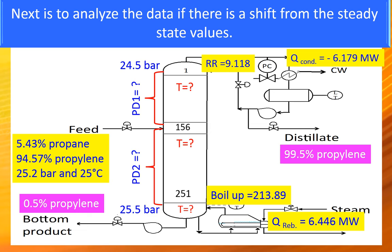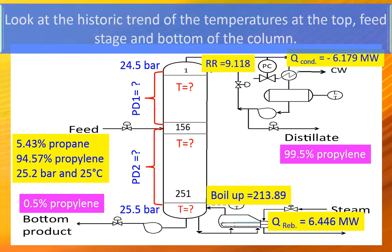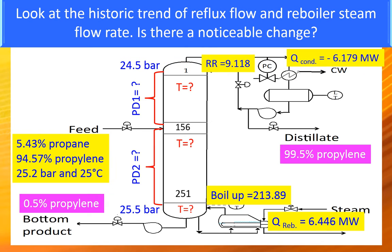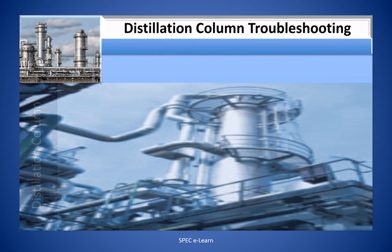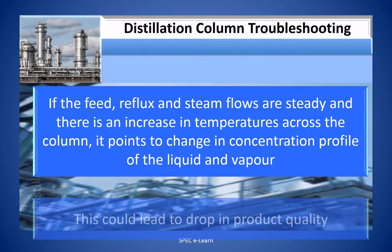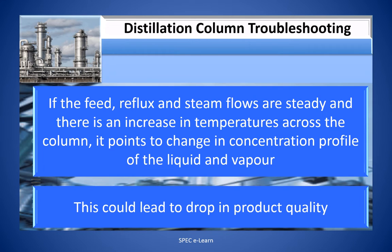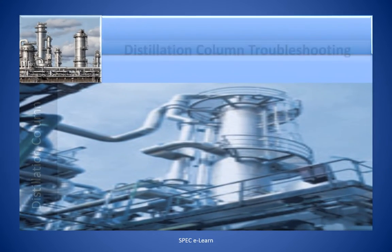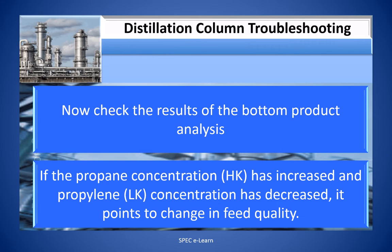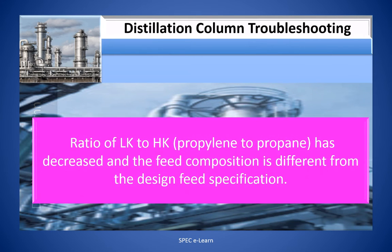The first step is to collect data from the DCS historian for the temperature profile and pressure drop across the column in the rectification and stripping sections. Analyze the data for any shift from steady state values. Look at the historic trend of temperatures at the top, feed stage, and bottom of the column, as well as the historic trend of reflux flow and reboiler steam flow rate. If the feed, reflux, and steam flows are steady and there is an increase in temperature across the column, it points to a change in concentration profile of the liquid and vapor, which could lead to a drop in product quality. Check the results of the bottom product analysis — if propane (heavy key) concentration has increased and propylene (light key) has decreased, it points to a change in feed quality, with the ratio of LK to HK having decreased.